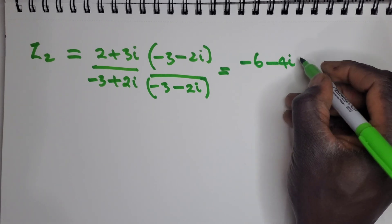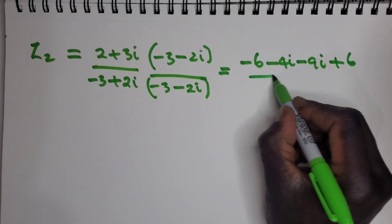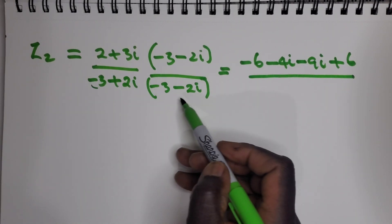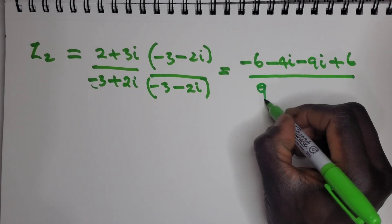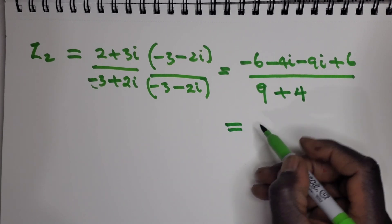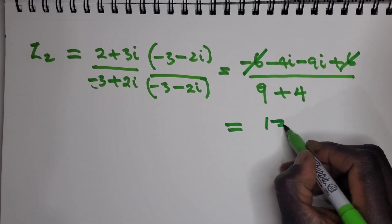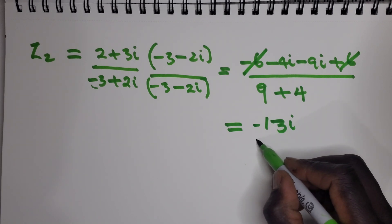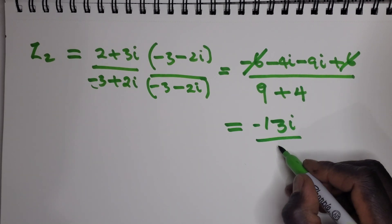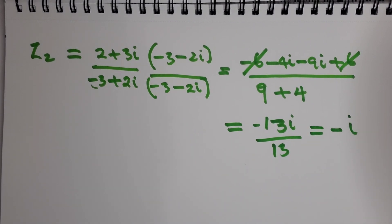Expanding the numerator gives terms including negative four i, minus nine i, plus six. The denominator is the sum of squares: nine plus four equals thirteen. This simplifies to negative thirteen i over thirteen, so z2 equals negative i.